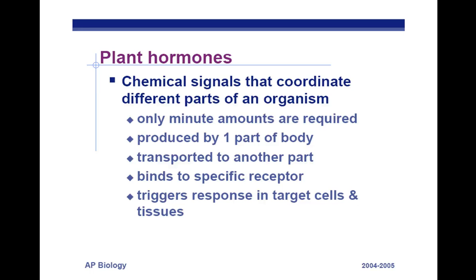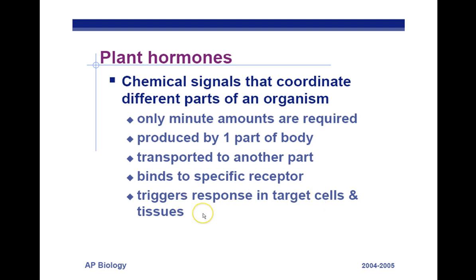Plant hormones: chemical signals that coordinate different parts of an organism. Only small, minute amounts are required. They are produced by one part of the body, transported to another part, bind to a specific — and underline 'specific,' they're very specific — receptor, and trigger a response in the target cells and tissues using that signal transduction pathway.